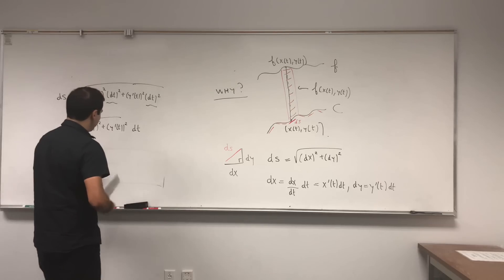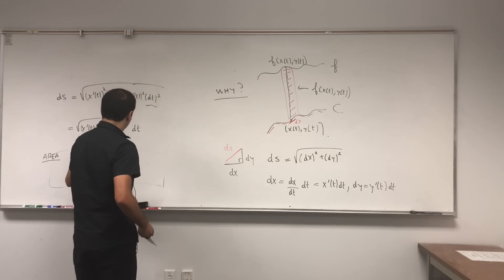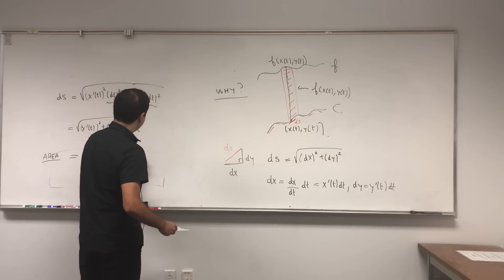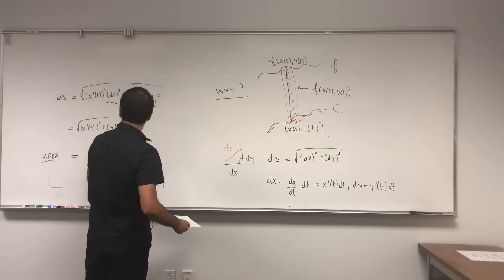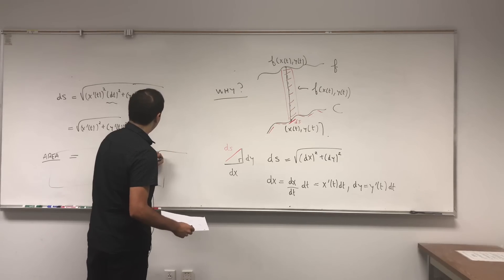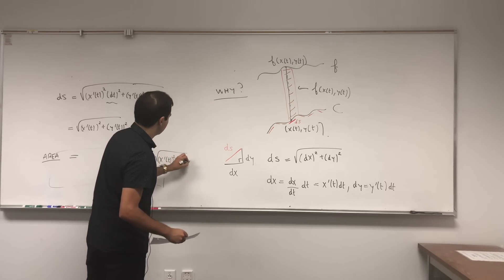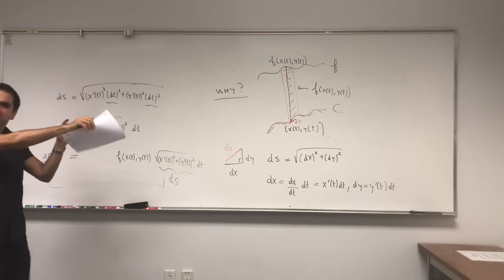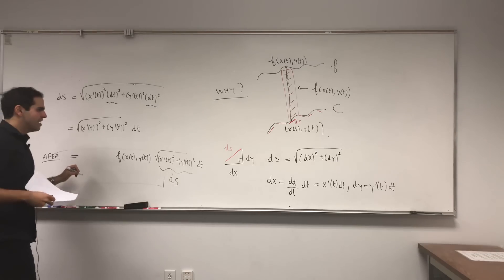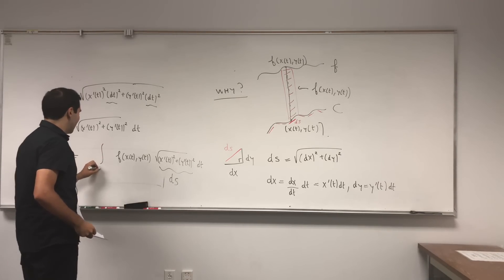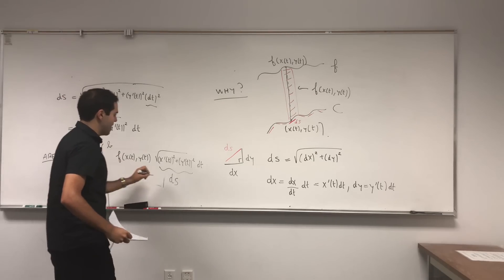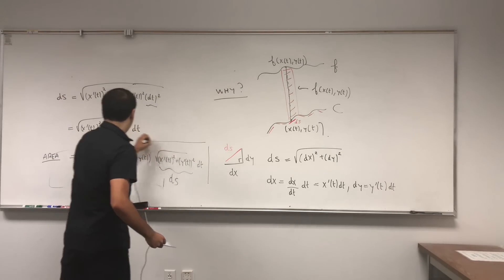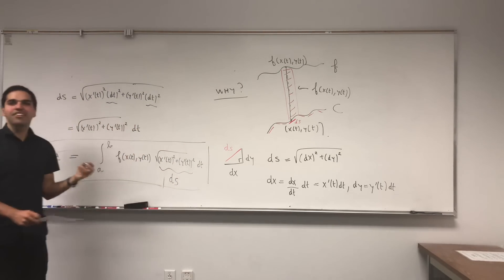The area, what do you do? You just take the product of those two, right? Base times height: f of xt, yt times square root of x prime t squared plus y prime t squared dt. So remember, this is dS. And lastly, all you need to do is sum up those little areas, and well, the correct way of summing up is just to integrate from a to b all those little things. And this is how you get the formula for the area under the fence of a function.